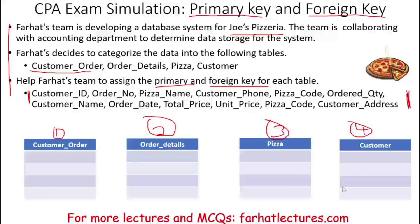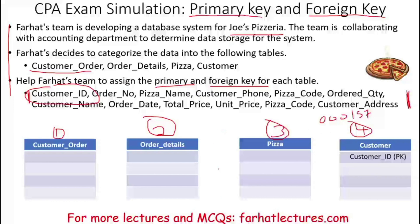So what can we do? For the customer, we're going to create a customer ID. A customer ID will be unique — for example, 000157. That customer is 000157. So the customer ID will be the primary key for the customer table.